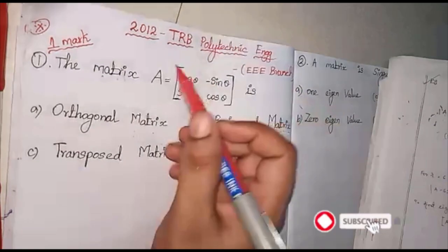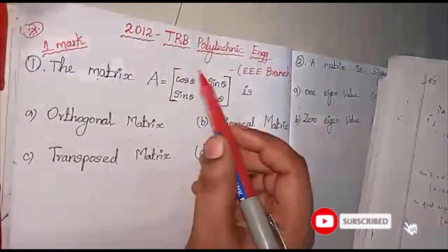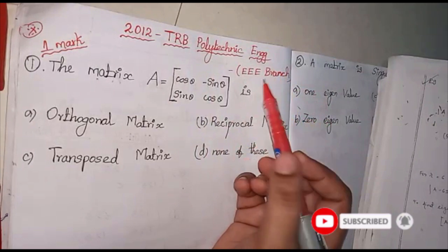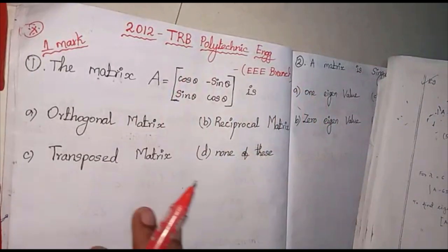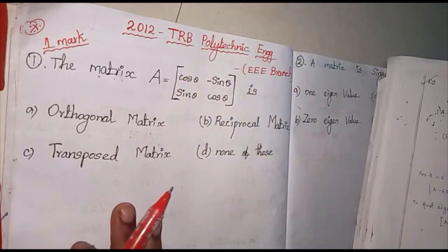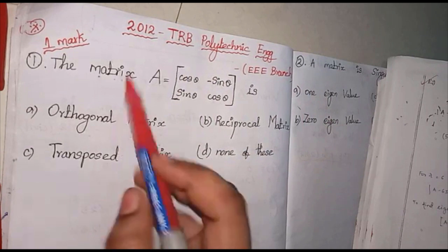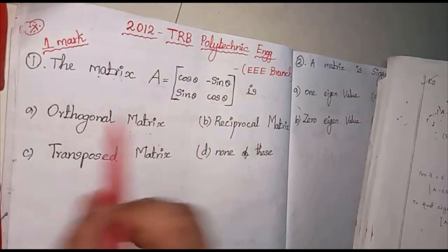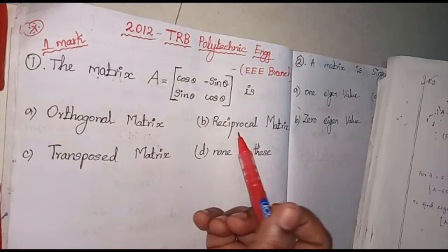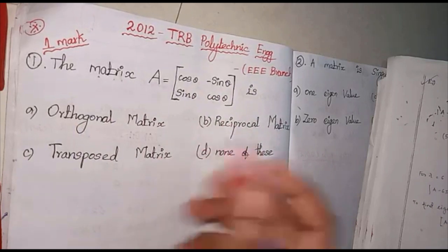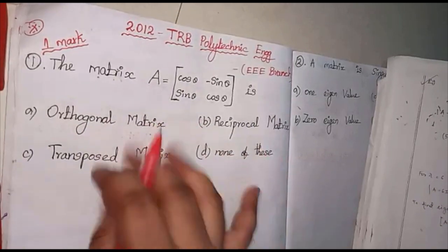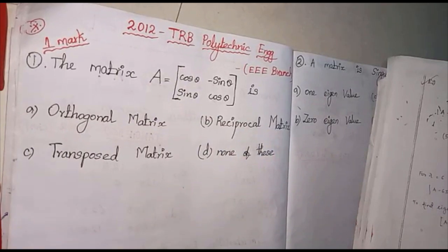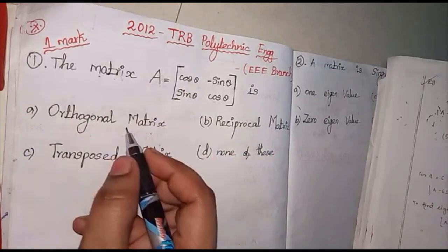Next, we come to the TRP politics exam in the EEEE branch. This is the previous year question, friends. The first question is: the matrix A is equal to a given matrix. Is this an orthogonal matrix, a reciprocal matrix, a transpose matrix, or none of the above? We will see the solution.